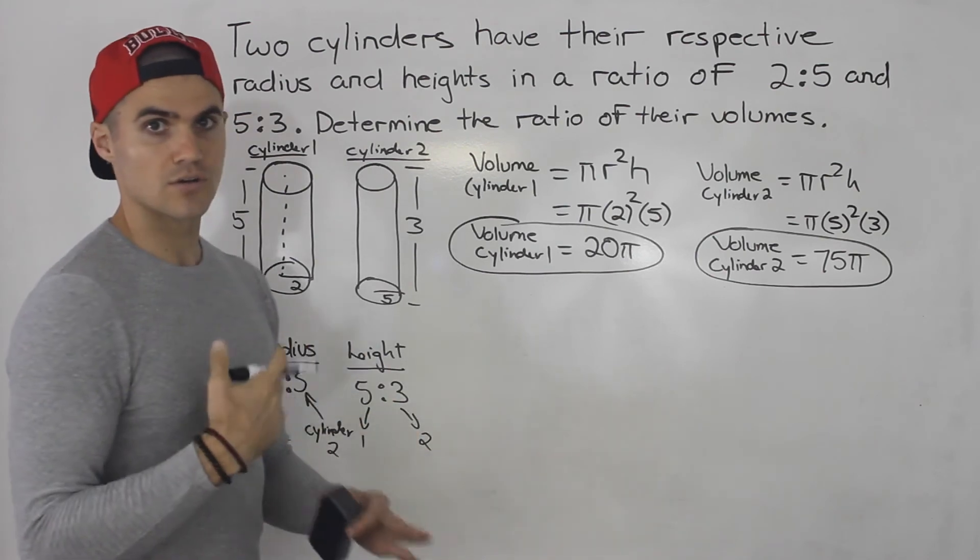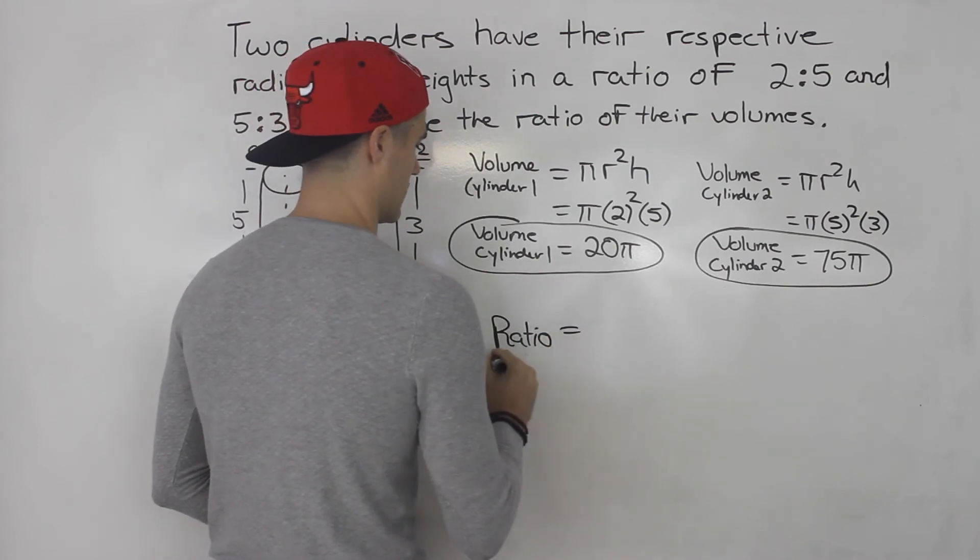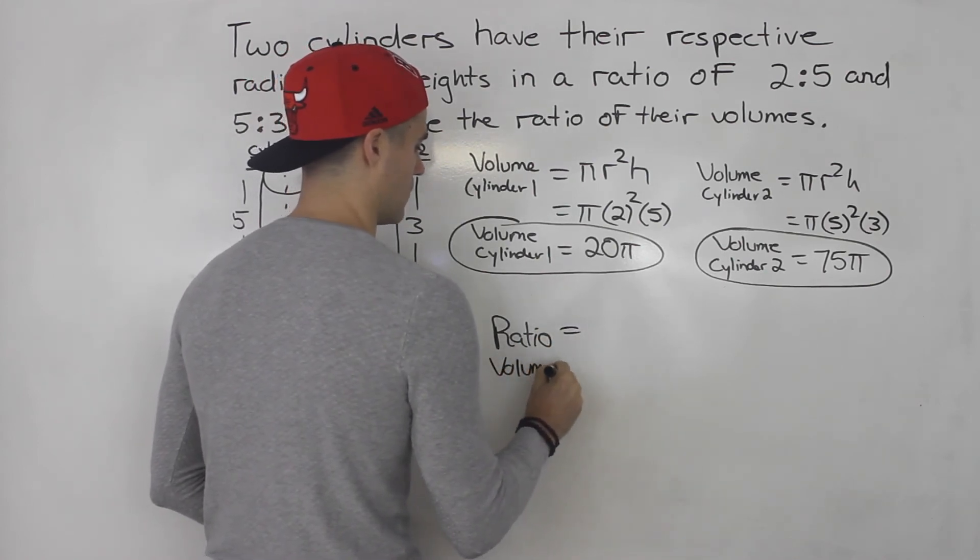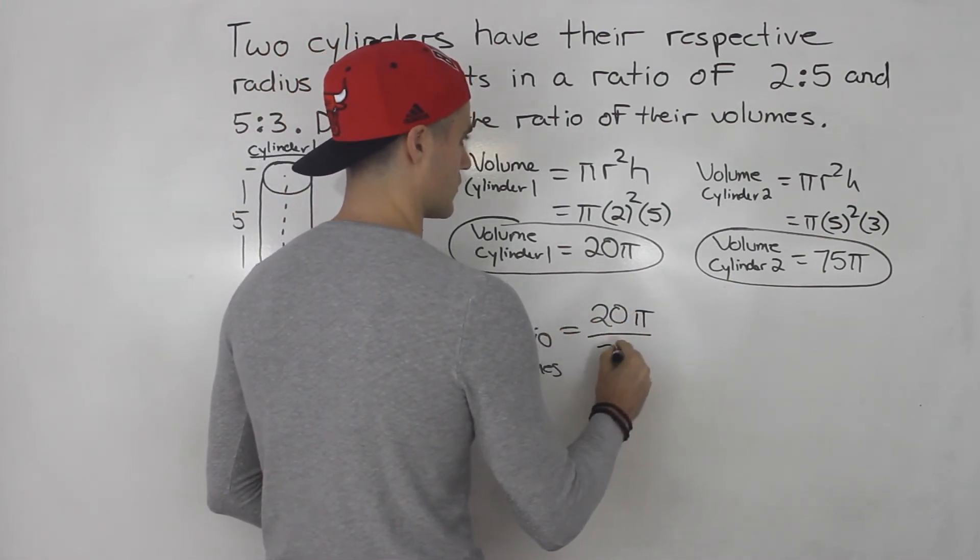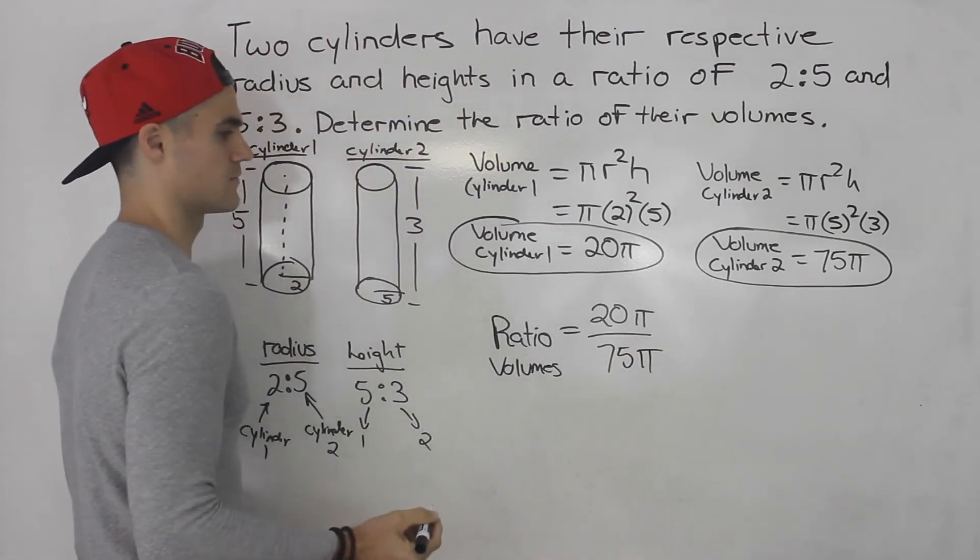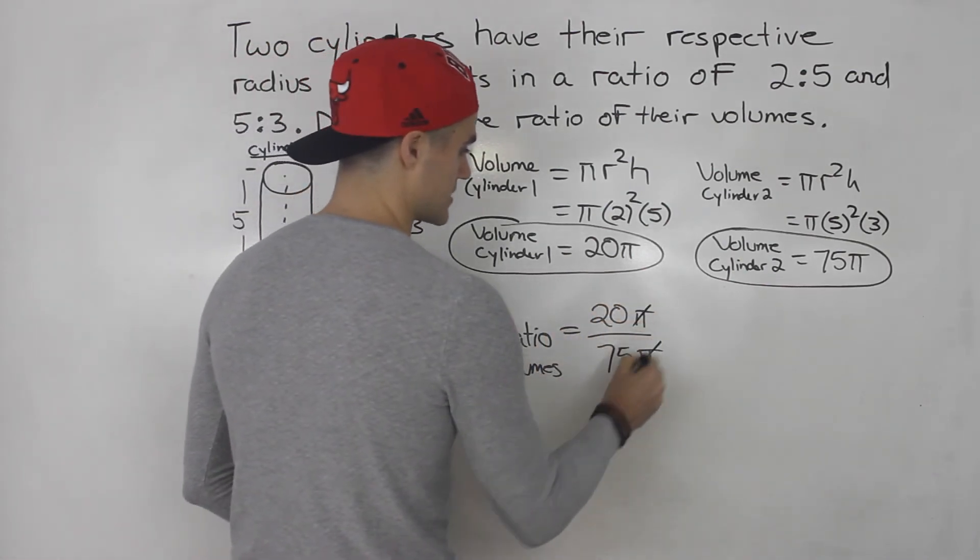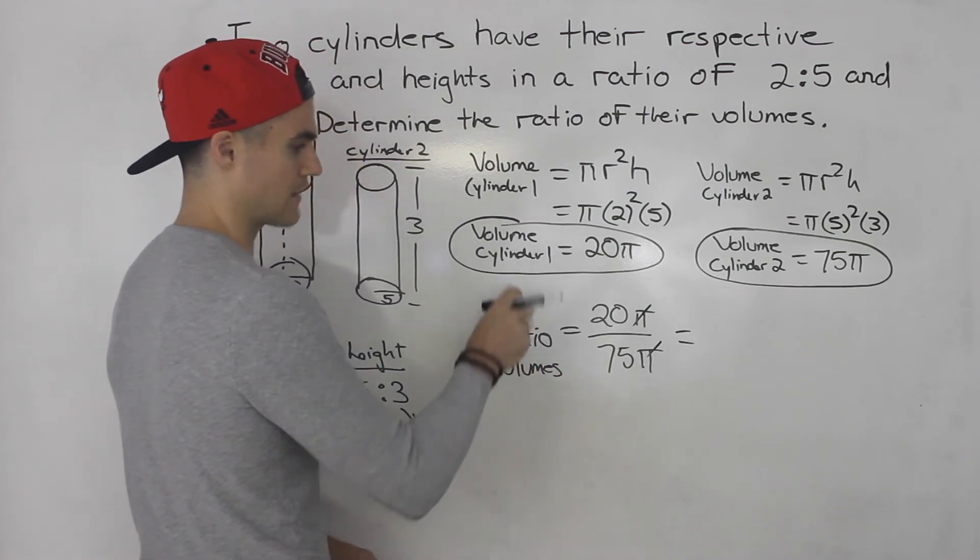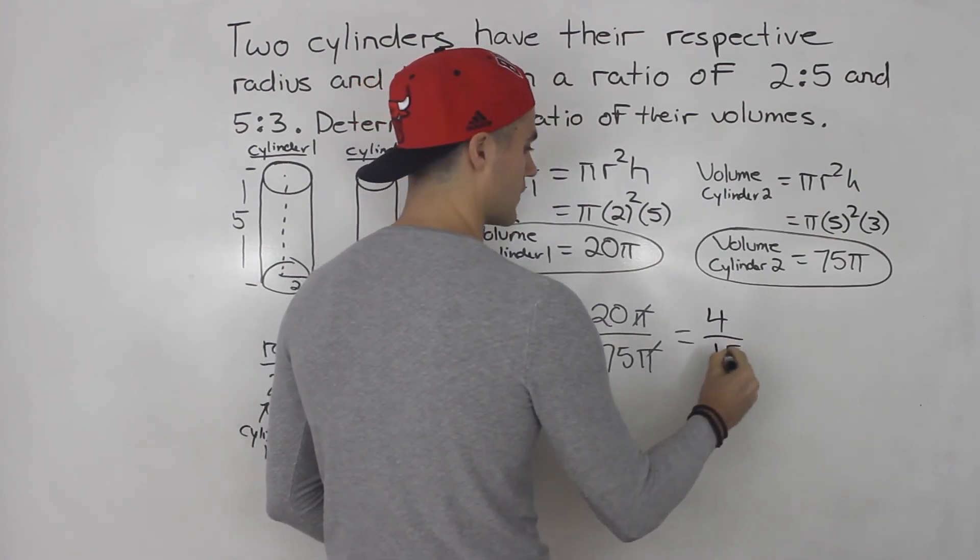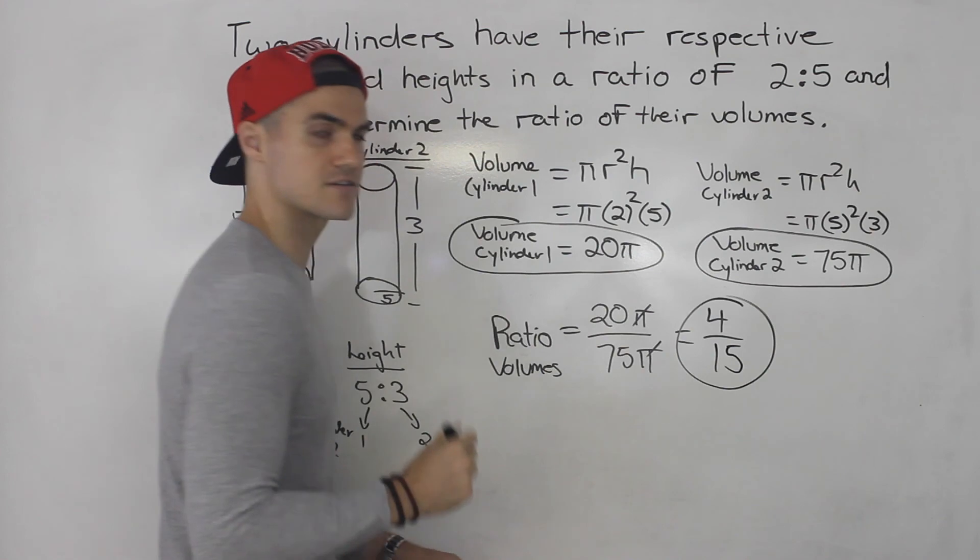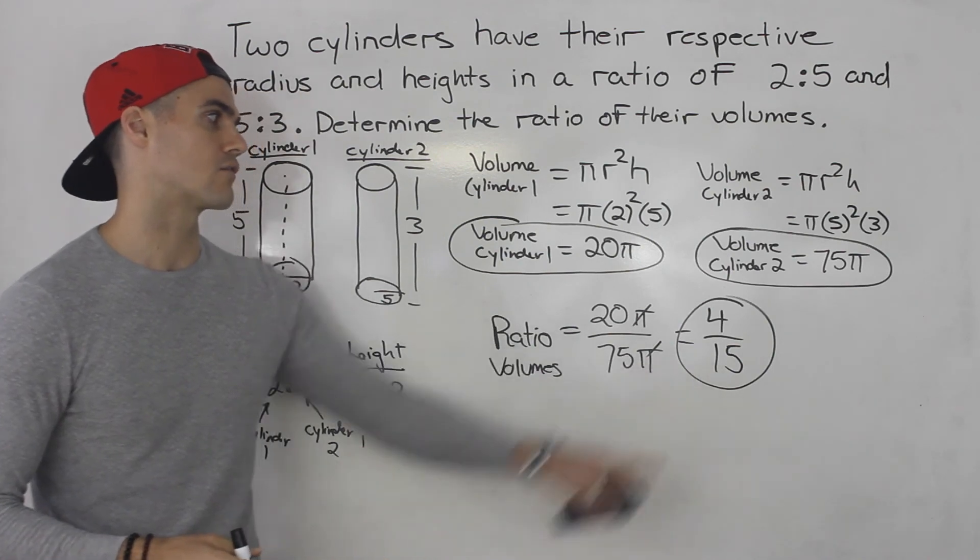And now they're asking what's the ratio of their volume. So if we want to take the ratio of the volumes, what we can do is we can take the volume of cylinder 1 and put it over the volume of cylinder 2. And now we would reduce this. So notice that the pi's cancel out. And then notice 20 over 75, 5 can go into both. So 20 divided by 5 gives us 4, and then 75 divided by 5 gives us 15. So that there is the final answer: 4 over 15 is the ratio, the reduced ratio of their volumes.